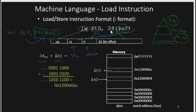For the load instruction, the source is the memory register $s2, so the binary representation of $s2 is stored in RS. The binary representation of $t0, which is the destination, is stored in RT. The offset 24 is stored in the 16-bit offset field. Adding the offset and the source register gives us the memory address where the data is stored, and that data is then loaded into $t0.